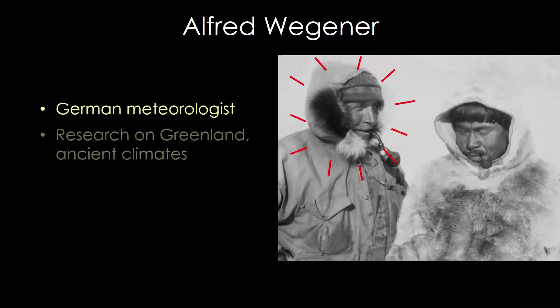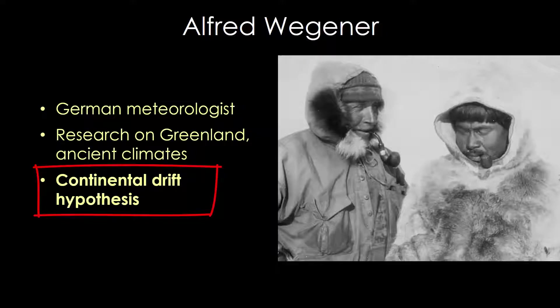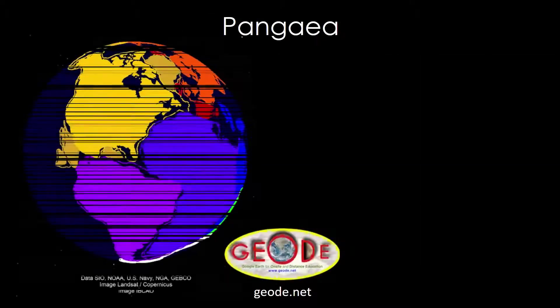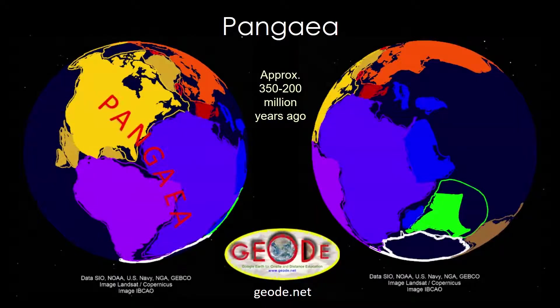Well, everyone that is but Alfred Wegener. Wegener was a German meteorologist that did research on Greenland and studied ancient climates. He collected data from several different sources to generate a new and controversial hypothesis that came to be known as continental drift. Wegener suggested that the world's major landmasses had formed a single supercontinent he named Pangaea, and that rather than moving vertically, Earth was dominated by horizontal motions as the continents drifted across its surface.